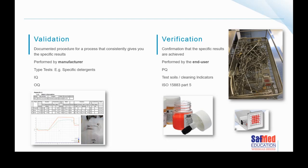Then there's verification — that's the end user, that's us in the CSSD. We have to confirm that what was supposed to happen did happen. For that, we also use test soils or cleaning indicators. The test soils and cleaning indicators we use must be manufactured in accordance with ISO 15883 or SANS 15883. Part 5 has not yet been adopted in South Africa. There are paint-on soils that are commercially available, or you can use cleaning indicators — quite a few suppliers provide these nowadays.